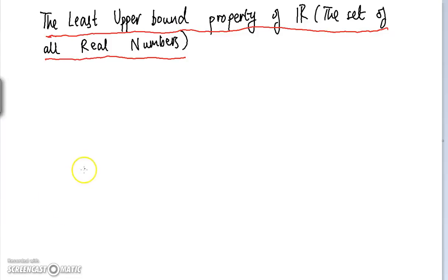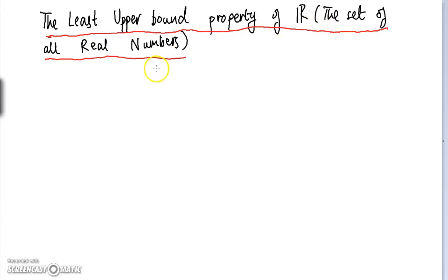Hello and welcome to the second video of the series where we aim to prove the existence of Euler's number. In today's video we're going to be defining the least upper bound property of R, which is the set of all real numbers. We're also going to be asserting a theorem, which if we have time we'll prove in this video, using the least upper bound property.